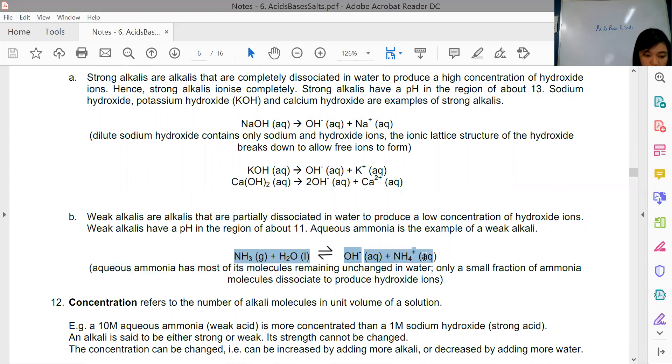They form hydroxide ions and NH4+ ions, but it is only partially dissociated. Hence, there is this reversible sign, which indicates that not all of the ammonia molecules dissociate to form OH- and NH4+ ions.